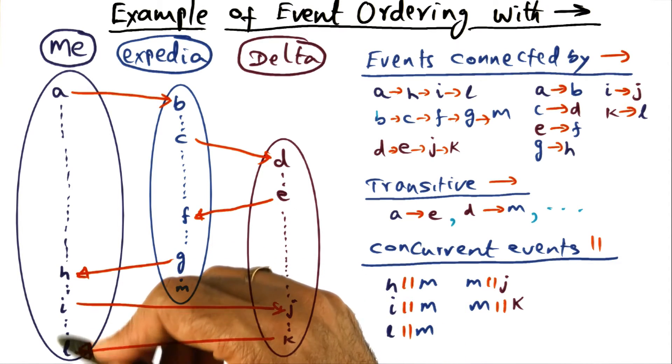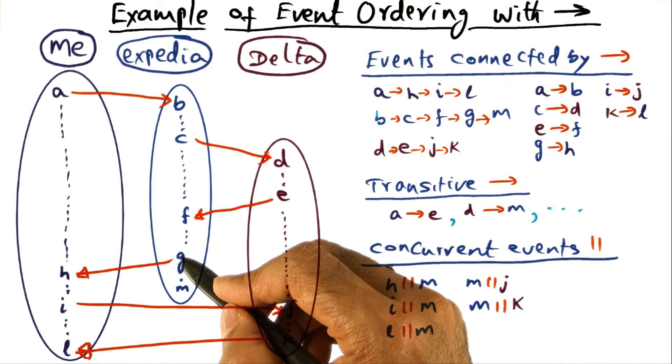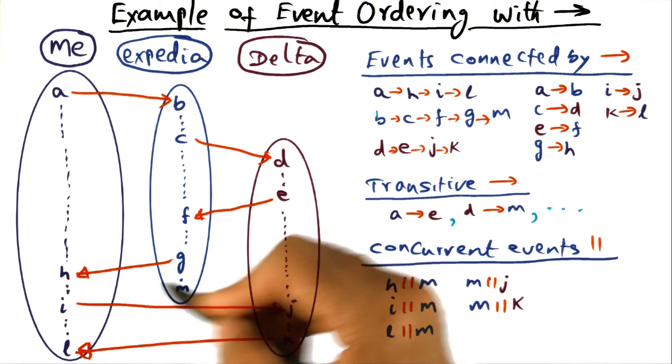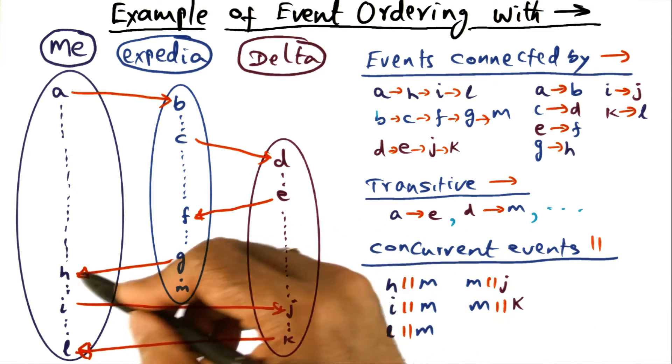it has no relationship to any of the events that are happening here. I'm showing G, this event H must have happened after G. But what about H and M? There is no relationship between these two guys.